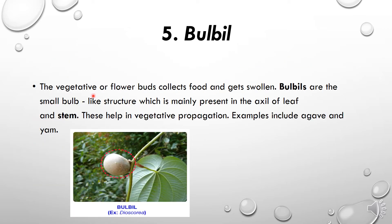Bulbil is also an important modification of the stem found in some plants. In this case, the vegetative or flower buds collect food and become swollen. Bulbils are small bulb-like structures mainly present in the axil of the leaf and the stem. They are rounded, swelling structures found at the base of the axil where the stem and leaf are joined. Their function is to collect food and help in vegetative propagation, aiding in the development and growth of new plants.